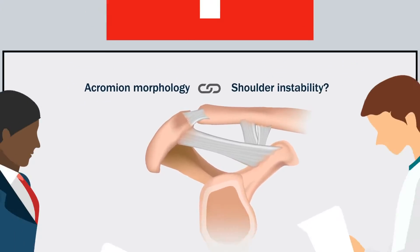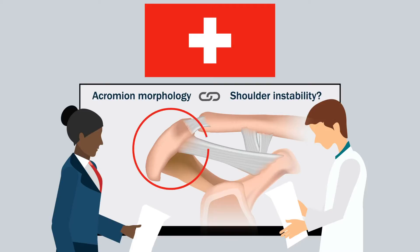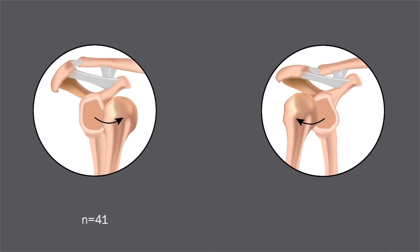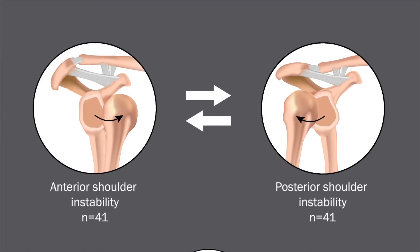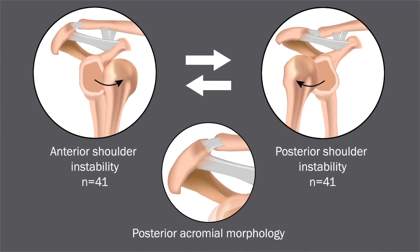Orthopedic researchers in Switzerland performed an observational study to find out. They matched 41 shoulders with recurrent unidirectional anterior shoulder instability with 41 shoulders with recurrent unidirectional posterior instability in order to compare their posterior acromial morphology in the sagittal plane.